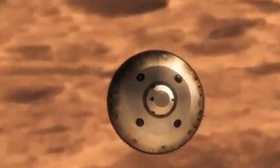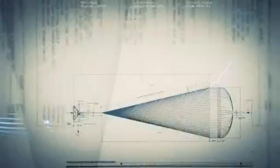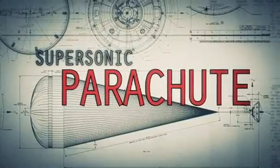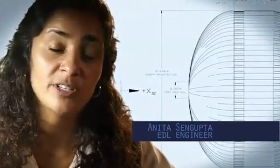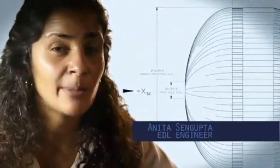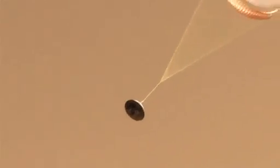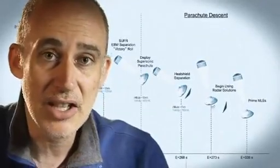We're still going about 1,000 miles an hour. So at that point, we use a parachute. The parachute is the largest and strongest supersonic parachute that we have ever built to date. It has to be able to withstand 65,000 pounds of force, even though the parachute itself only weighs about 100 pounds. When it opens up that fast, it's a neck-snapping 9 Gs.